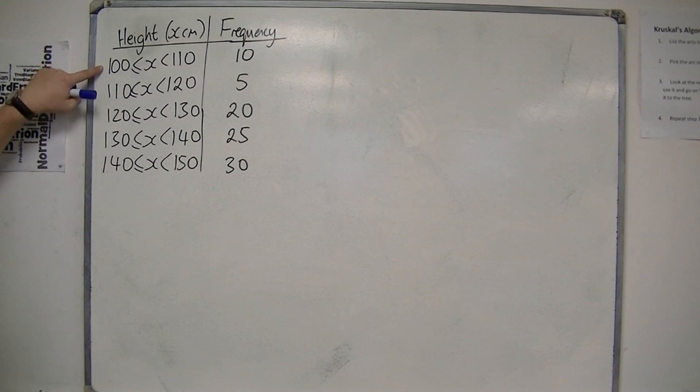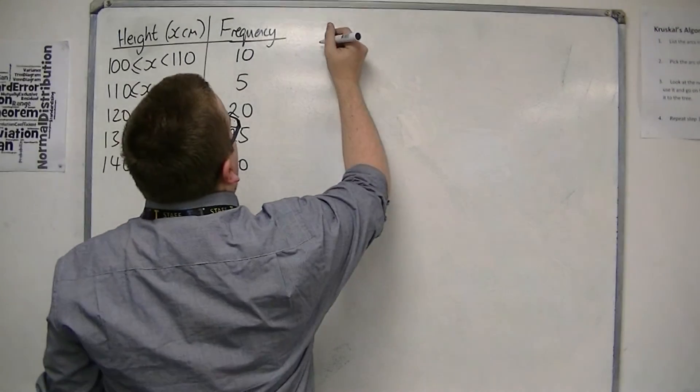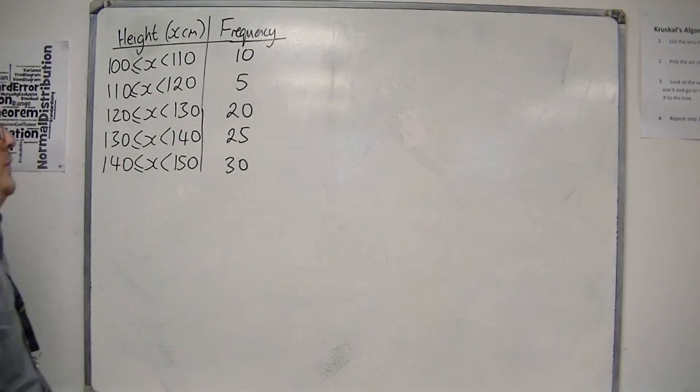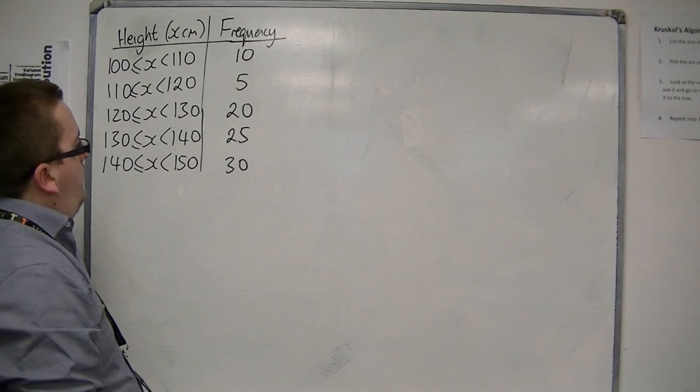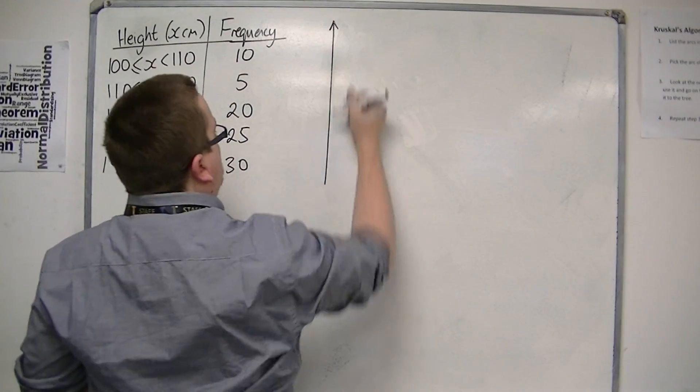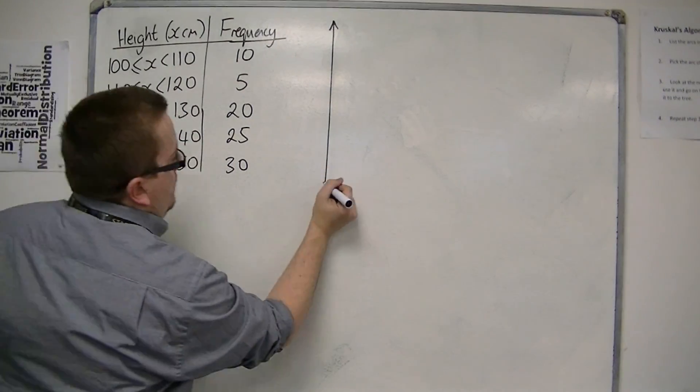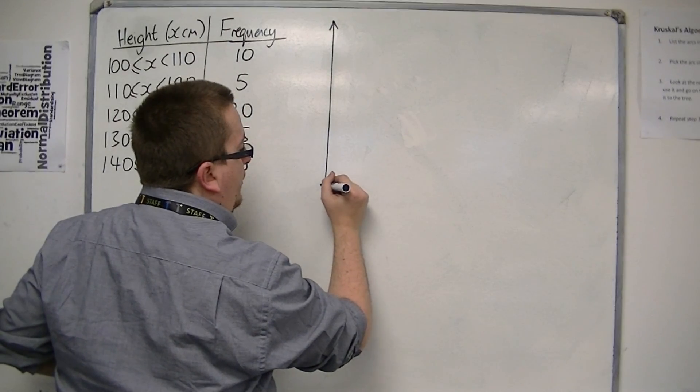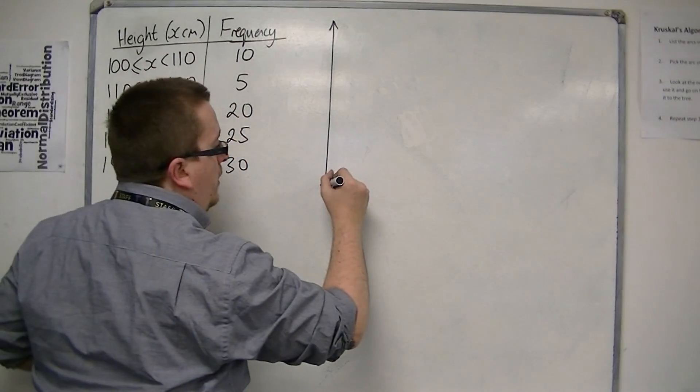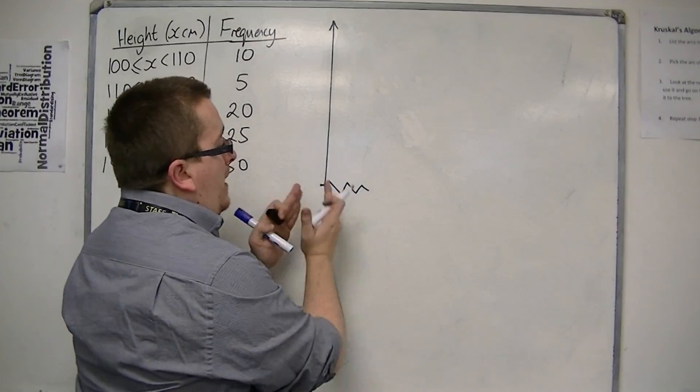We can see that the heights are going from 100 to 150. I don't have any heights below 100. I'm going to use frequency along the side. I'm going to start with the heights along the bottom. Rather than starting at 100, I'm going to use a jagged line, which I introduced in the previous video, which allows me to skip out from 0 to 100.